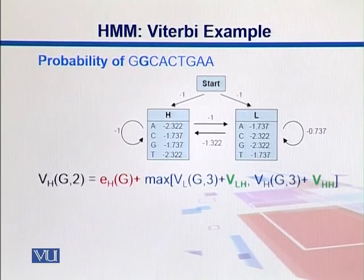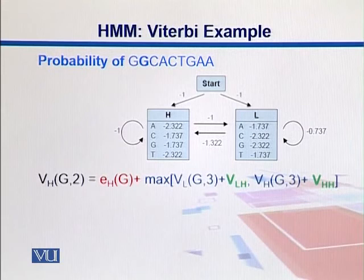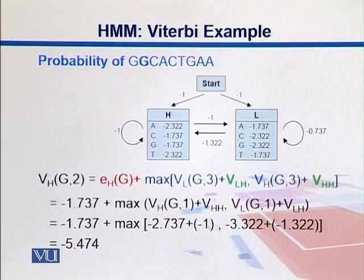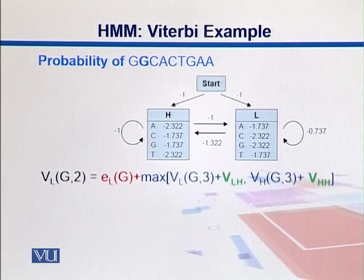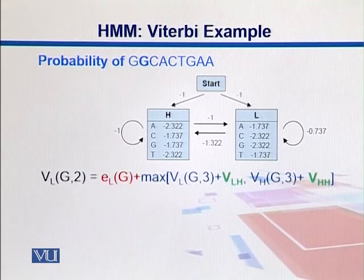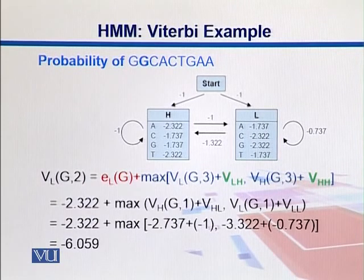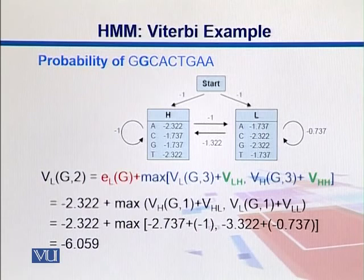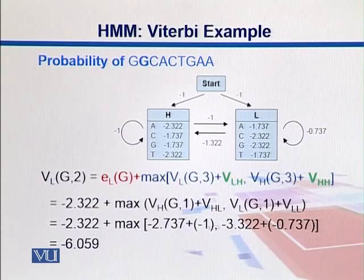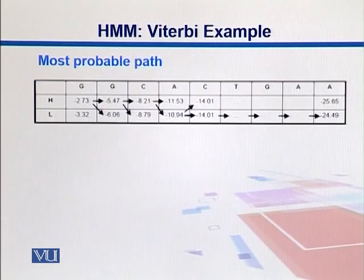Let's move one more nucleotide further. What's the probability of observing G at position 2? We calculate for this sequence coming from state H. Plugging in the values and summing up, our number is -5.474. For position 2 from state L, we plug in values, pick the maximum among these two, and get -6.059. Since we're looking for the most probable path, we want maximum values. The possibility from state H is higher.